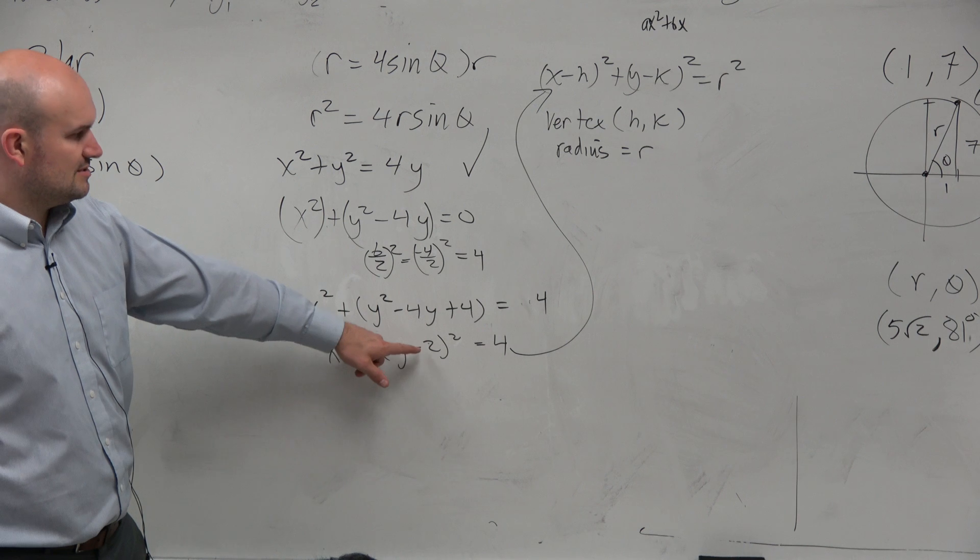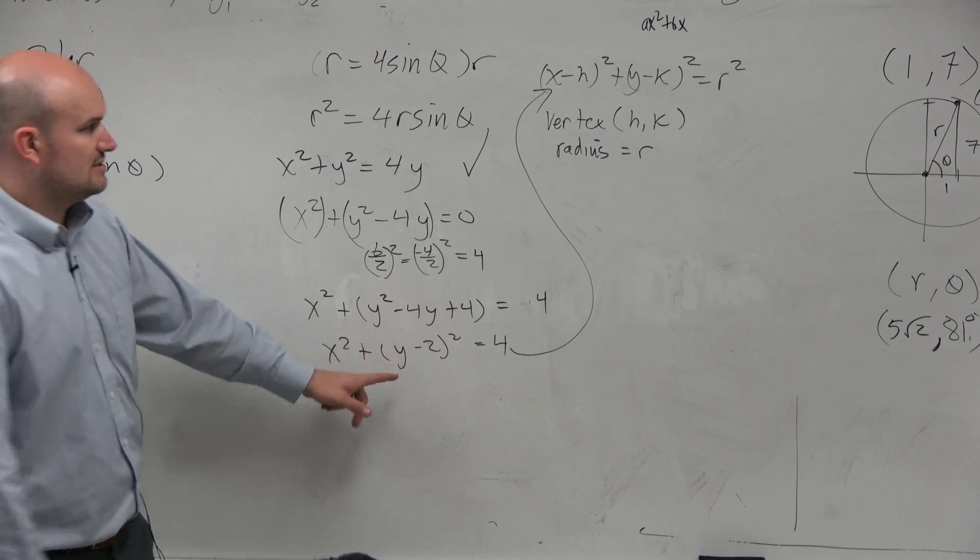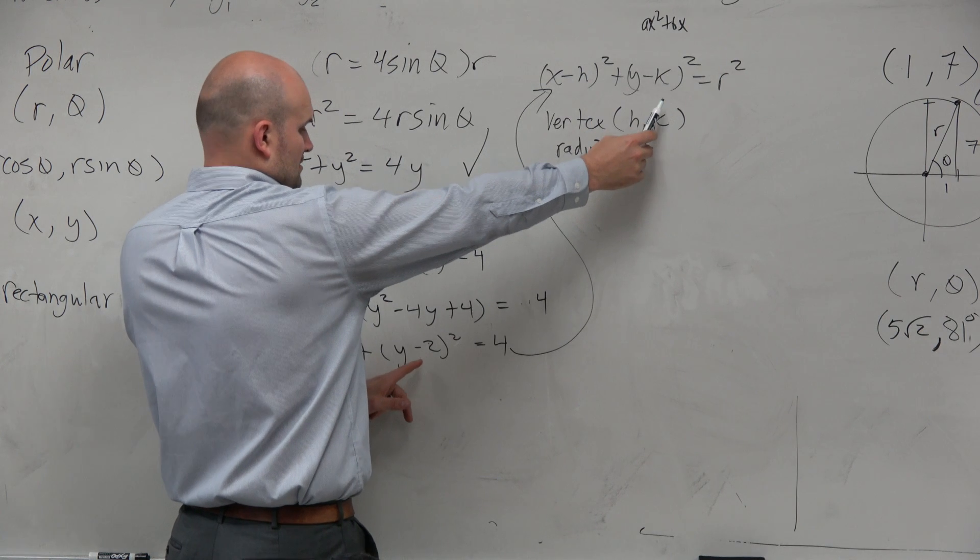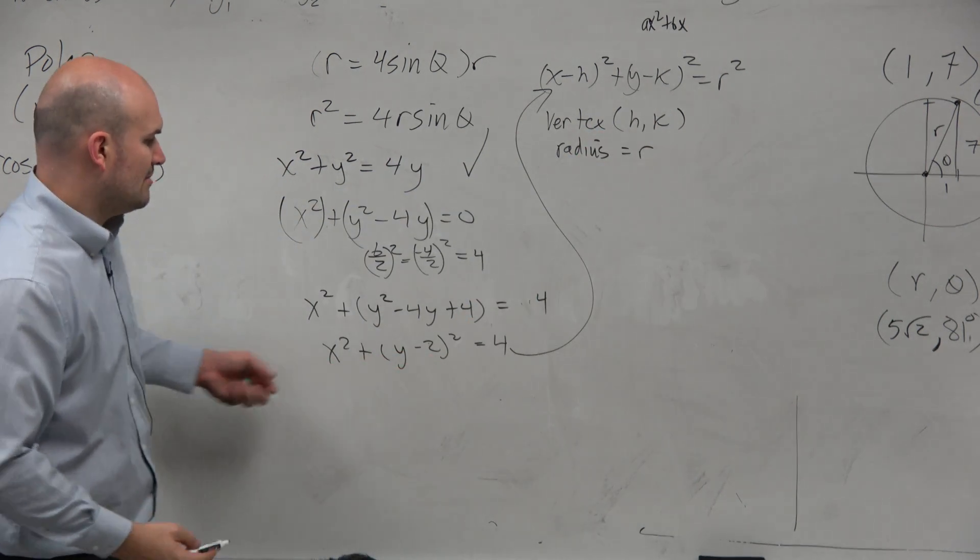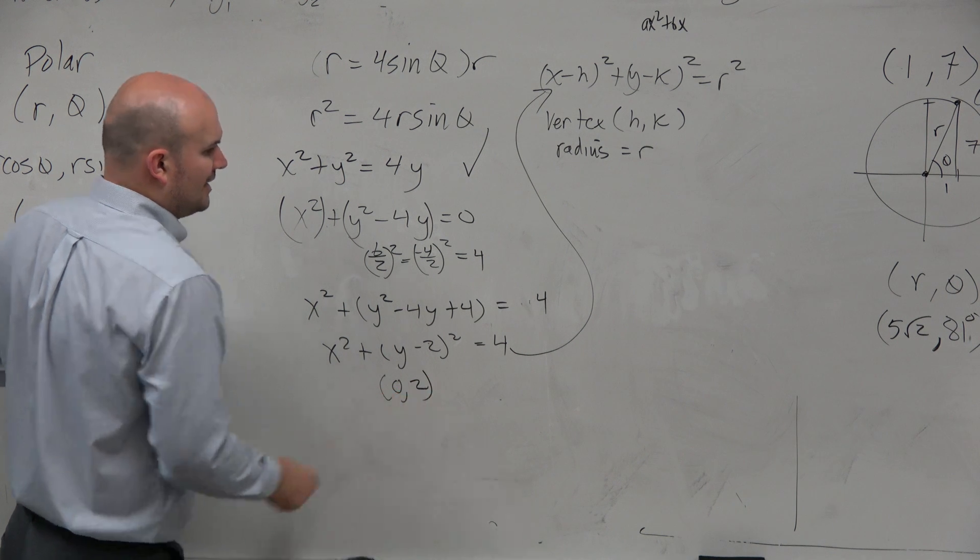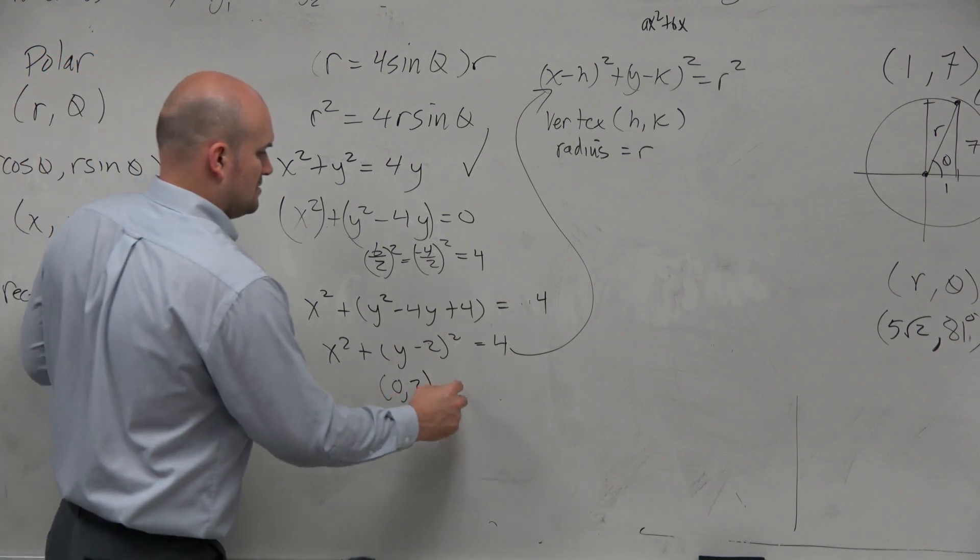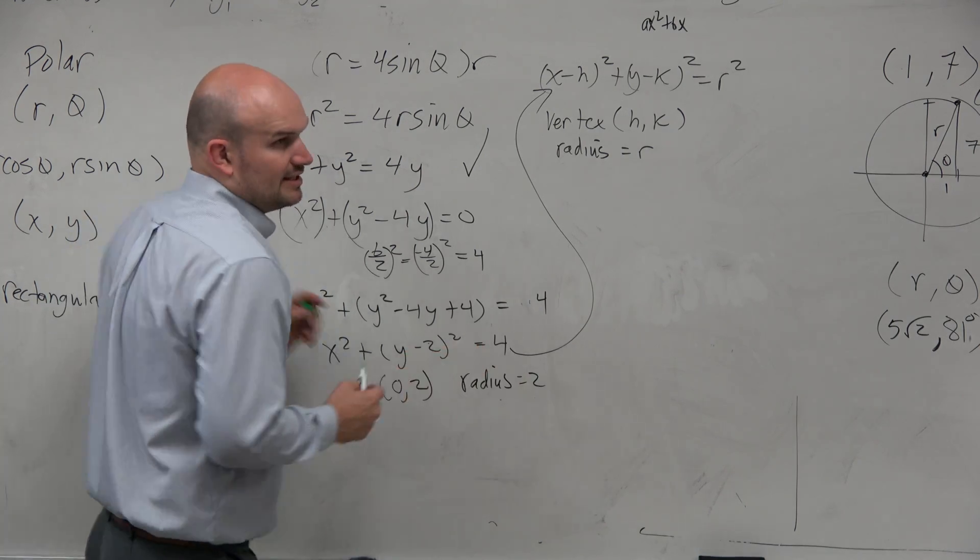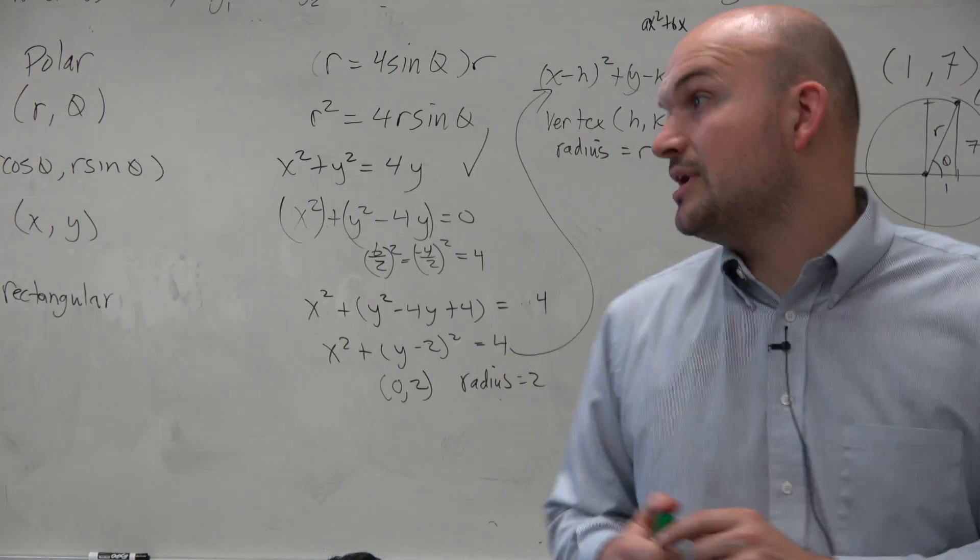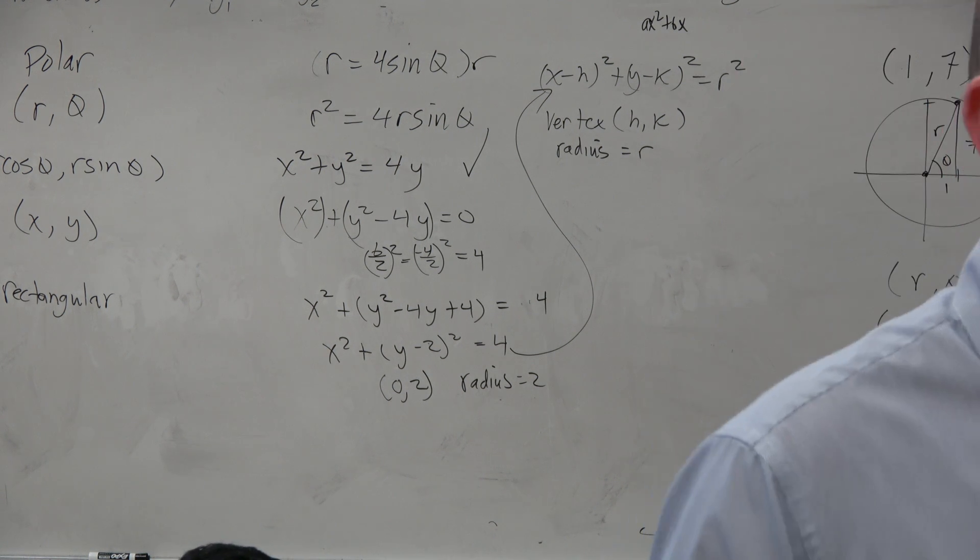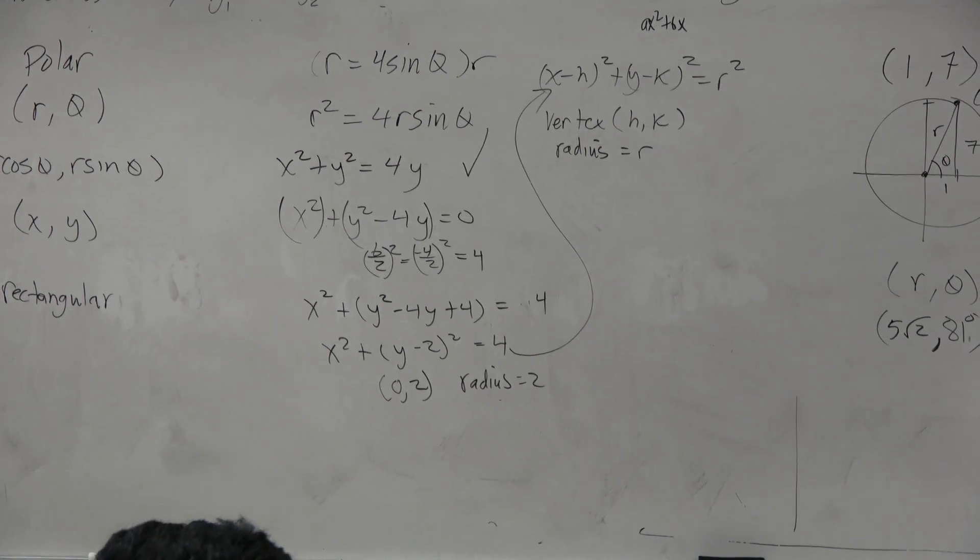h is 0. And my k is? It's y minus k. So this is y minus 2. So my form is h comma 2. And my radius is? Good. So let's go and look on a calculator, see if that's right. So why don't you guys type in your calculator, r equals 4 sine of theta. See if that looks like a circle with a center.